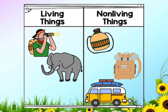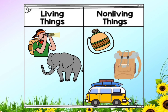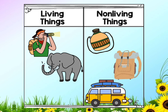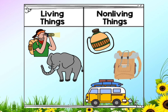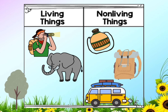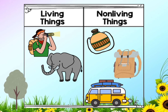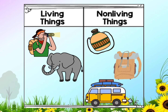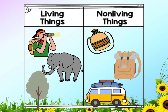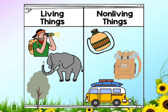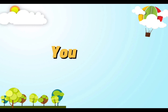What about the van? It's not eating or breathing. Very good — non-living thing. And the last one is the tree. The tree breathes, moves, excretes, reproduces — yes, so it is a living thing. Well done!